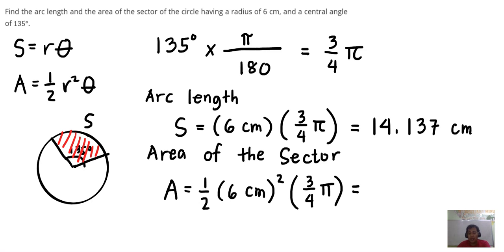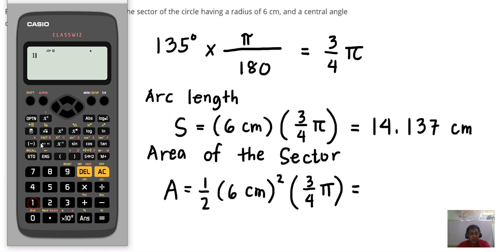So this is equal to 1 half times 6 squared, and then times 3 over 4 pi.